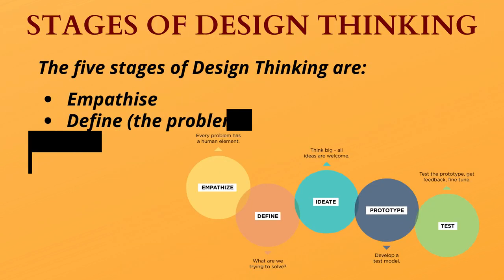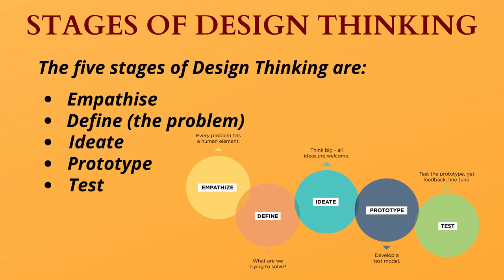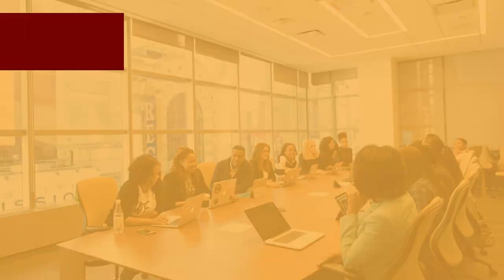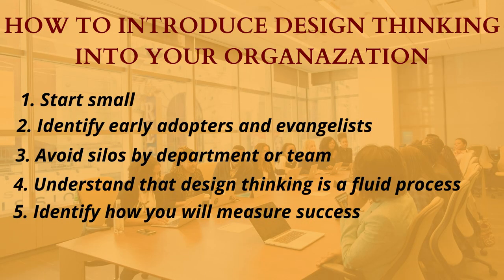The 5 stages of Design Thinking are: Empathize, Define, Ideate, Prototype, and Test. In Empathize, we need to research users' needs. In Define, we need to state users' needs and problems. In Ideate, we need to challenge assumptions and create ideas. In Prototype, we need to start to create solutions. In Test, we need to try our solutions out.